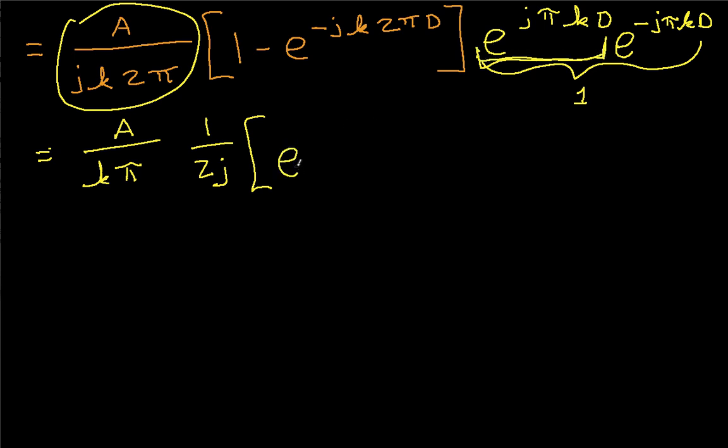Now we'll take 1 and multiply it by this first term here. So we have e to the j k pi d and then we'll take this term and multiply it by this first term. And so we have e to the minus j k 2 pi d, e to the j k pi d, and then we'll have this guy out in the end here, e to the minus j k pi d.